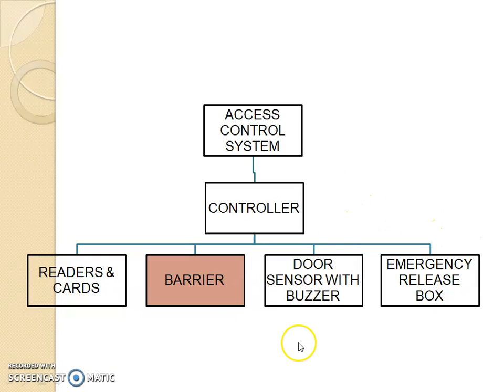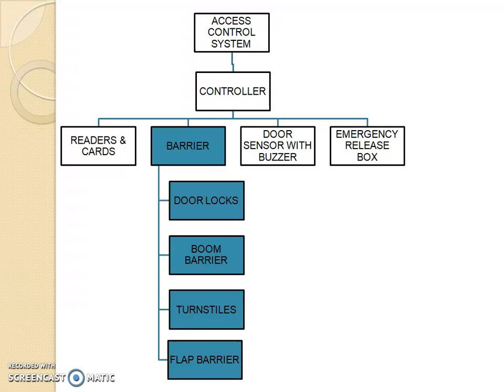Next in access control is barriers. A barrier system is a physical obstruction for people or vehicles which is used for accessing or restricting access. To restrict access, there are door locks, boom barriers, turnstiles, plant barriers, etc.